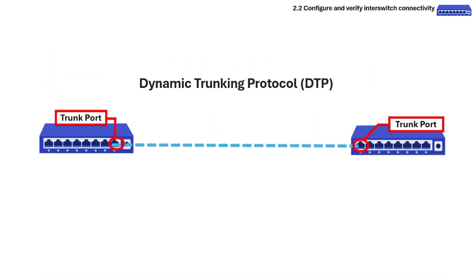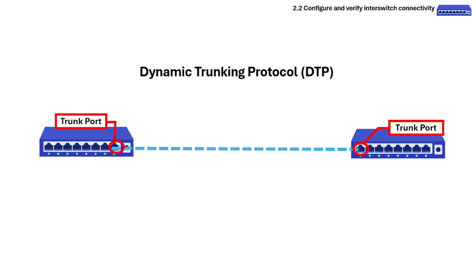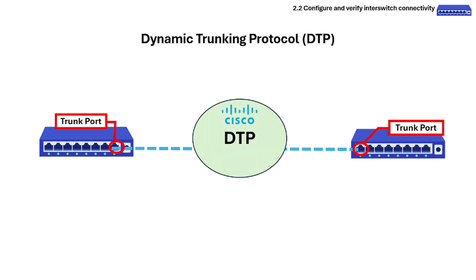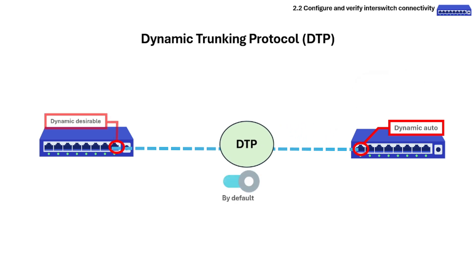Let's now talk about Dynamic Trunking Protocol. Dynamic Trunking Protocol, or DTP, is a Cisco proprietary protocol used to negotiate trunking between switch ports. It automatically determines if a link should be an access port or a trunk port, and which trunking protocol to use. DTP is enabled by default on Cisco switches and interfaces will be in either Dynamic Auto or Dynamic Desirable mode.